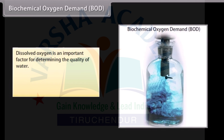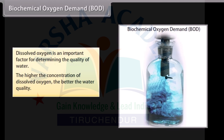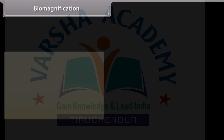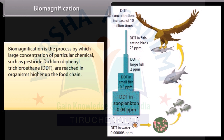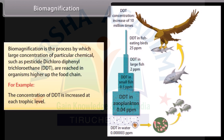Dissolved oxygen is an important factor for determining the quality of water; the higher the concentration of dissolved oxygen, the better the water quality. Biomagnification is the process by which large concentrations of a particular chemical, such as the pesticide dichlorodiphenyltrichloroethane (DDT), are raised in organisms higher up the food chain. For example, the concentration of DDT is increased at each trophic level, as shown in the diagram.